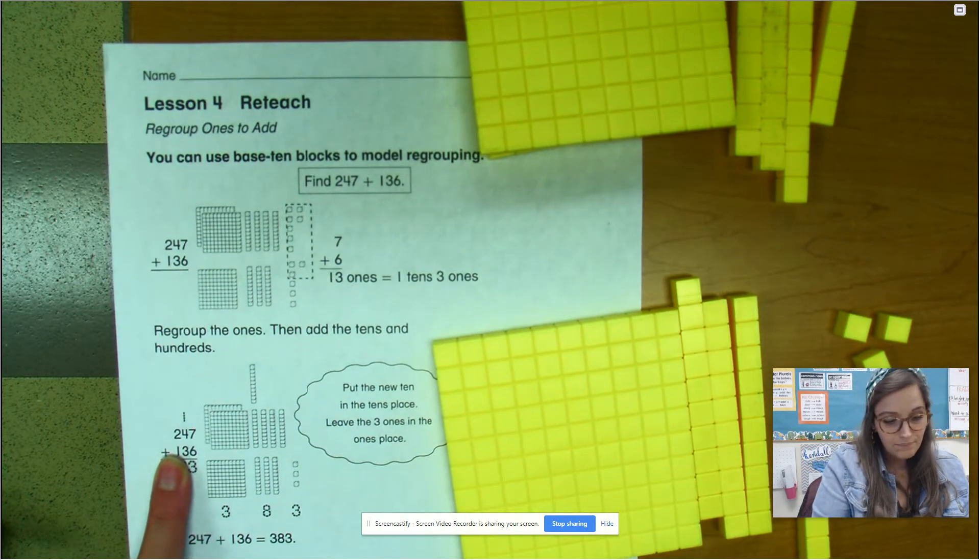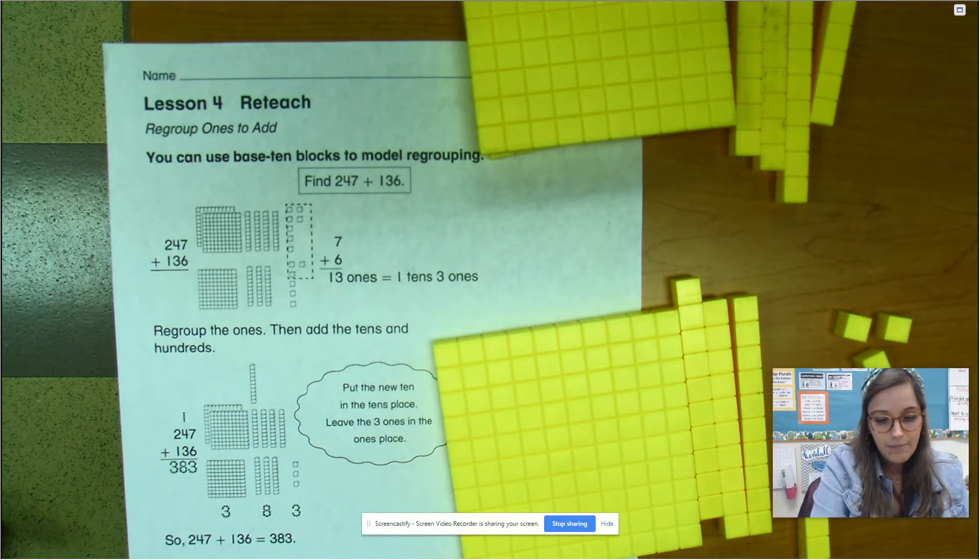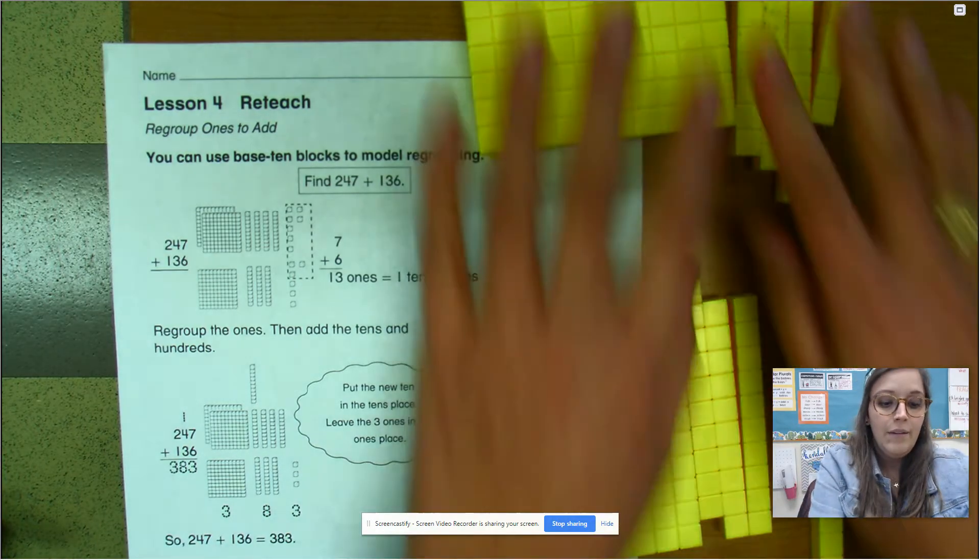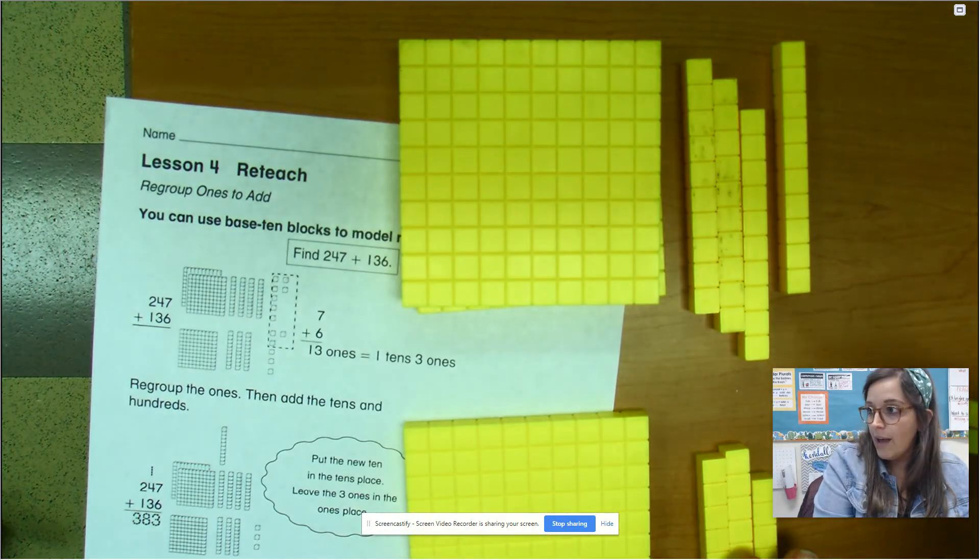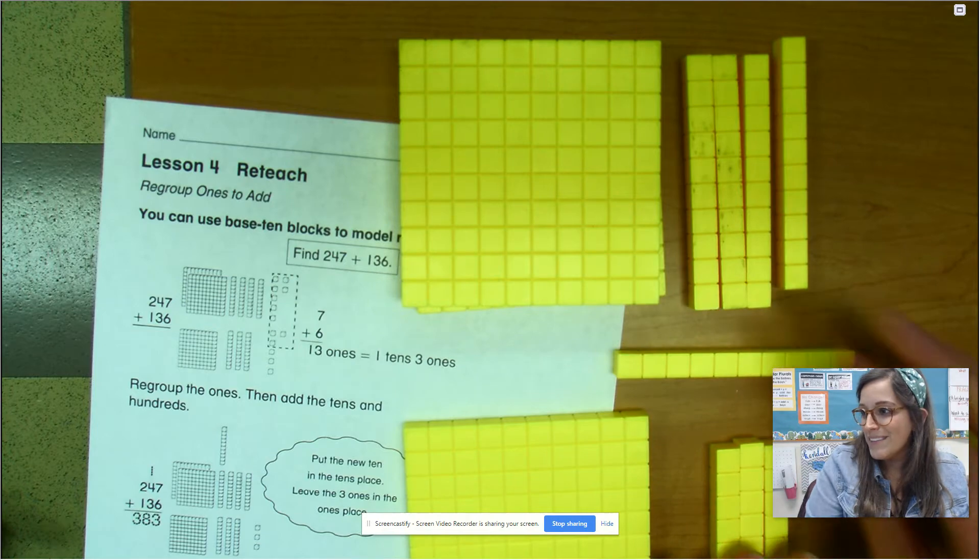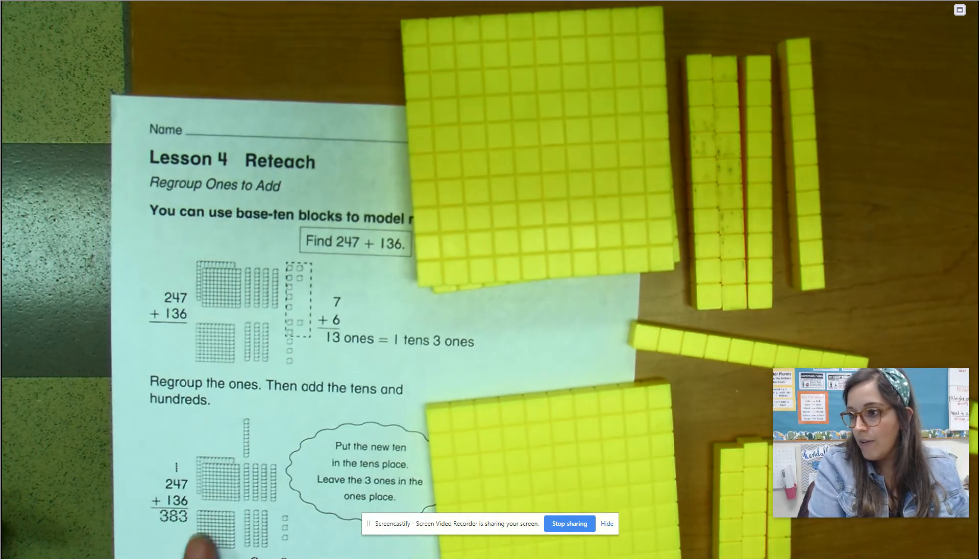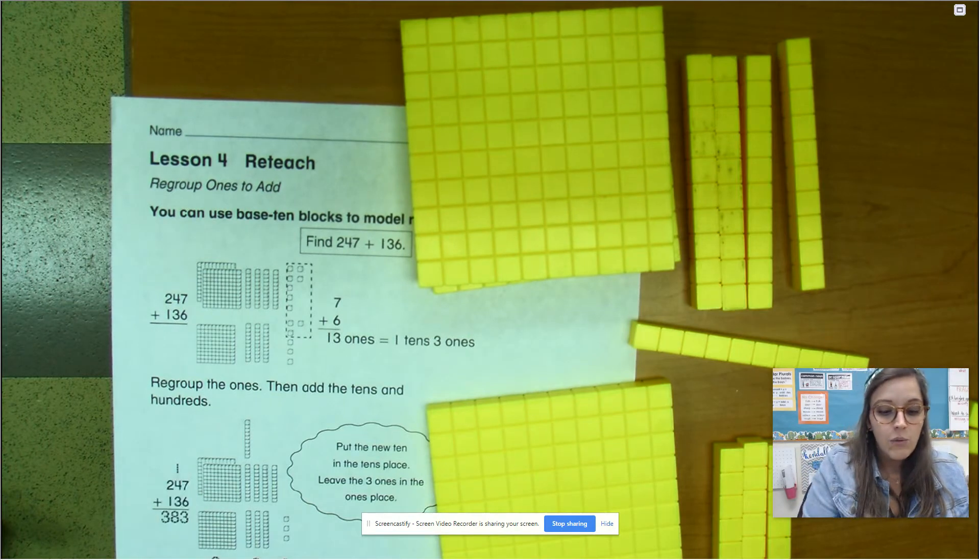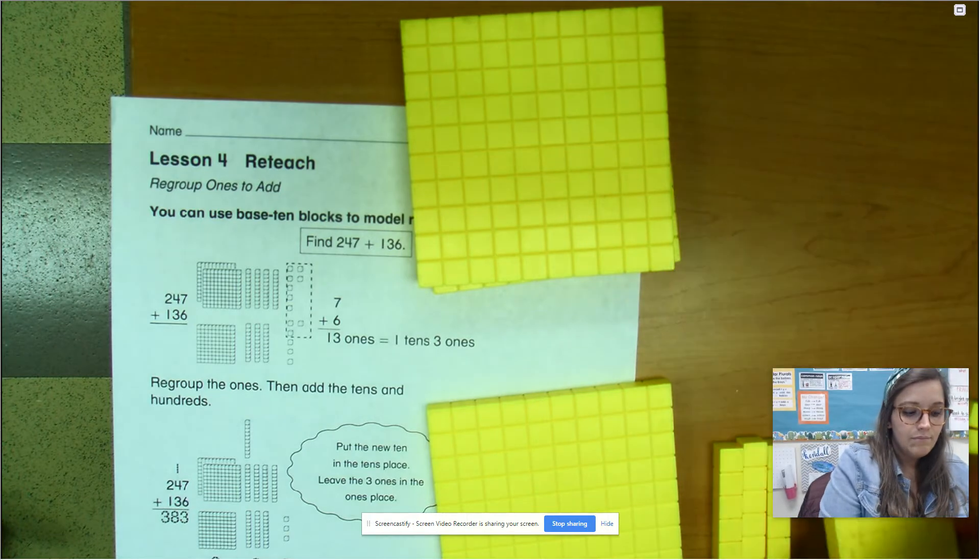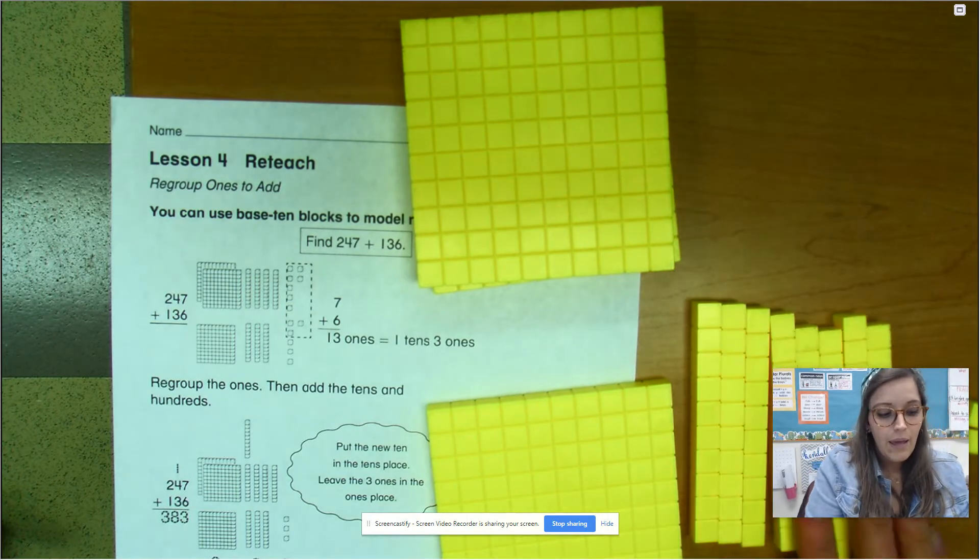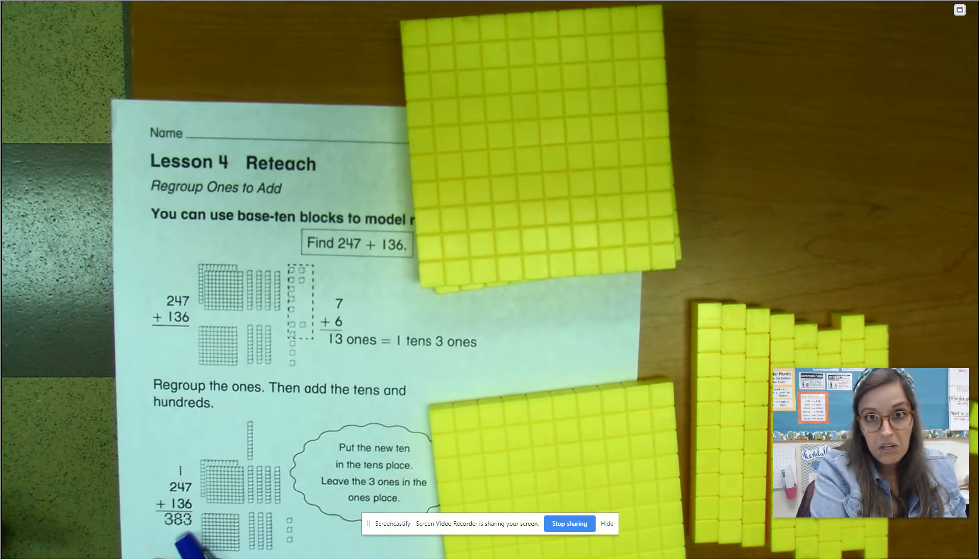And then we add those 10s together. And here's where it becomes a little bit different. So now I have my regrouped 10 in the middle so you can see it. So I have four 10s, three 10s, and one 10, which is exactly what we have over here, right? Four 10s, three 10s, and one 10. So when I add all those together, what do I get? Eight, eight 10s. So now I put my eight in the 10s place. I'm good to go there.